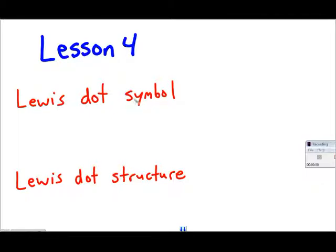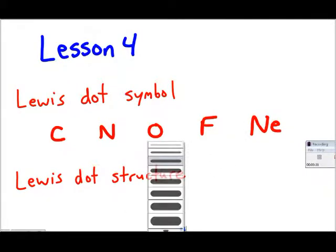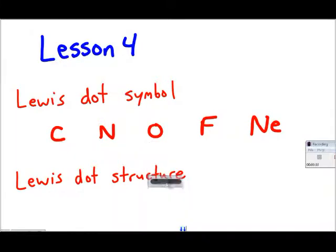So Lewis dot symbols — think of chemical symbols. Think of carbon, nitrogen, oxygen, fluorine, and neon. We've got elements 6 through 10 right here. This is the chemical symbol for each. If we want to make the Lewis dot symbol for each, then we need to add a dot for each of the valence electrons found in a neutral atom of each of these elements.